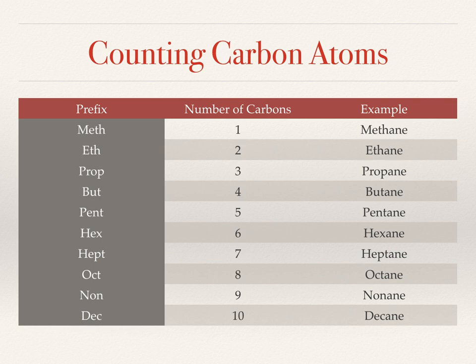So now we know we're only going to be looking at carbon atoms and the things they can do. We need to know how to count them. Scientists love to name things, and one thing scientists love even more is giving the same thing multiple names — especially if you can use Greek and Latin. That said, this is how you count up to the first 10 carbon atoms in a molecule.